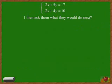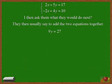I then ask them what they would do next. They usually say that they would add the two equations together, obtaining 9y equals 27. If you add the two equations together, the x's would cancel, the 5y and the 4y would add to give you 9y, and the 17 and 10 would add to give the 27.